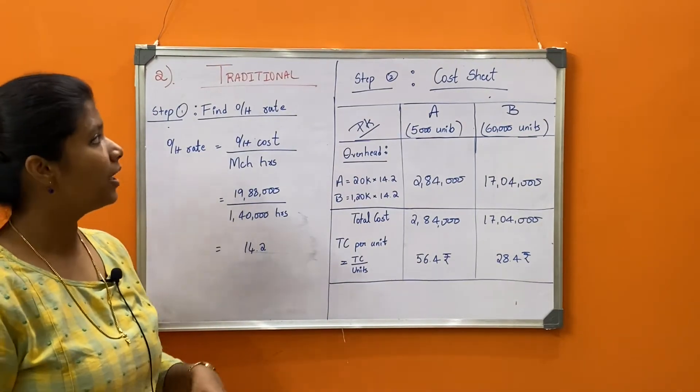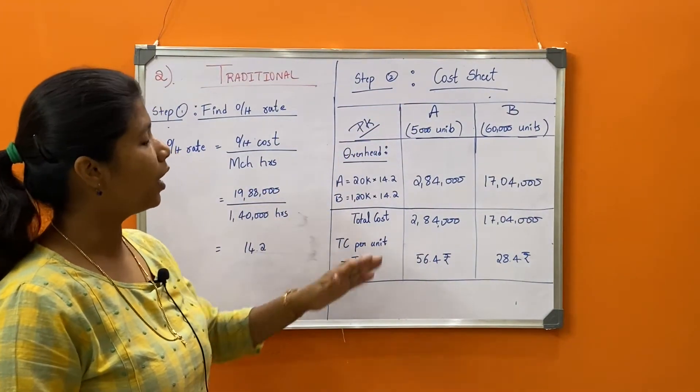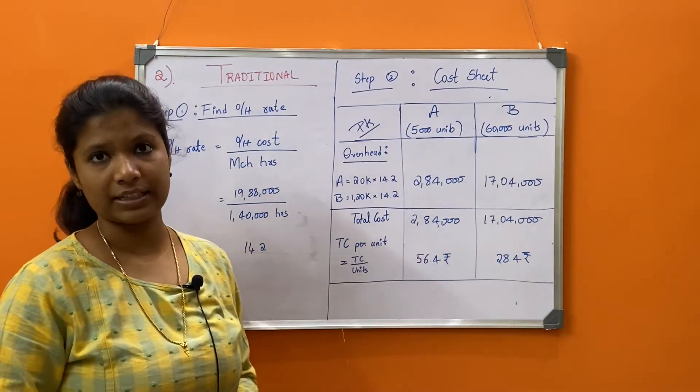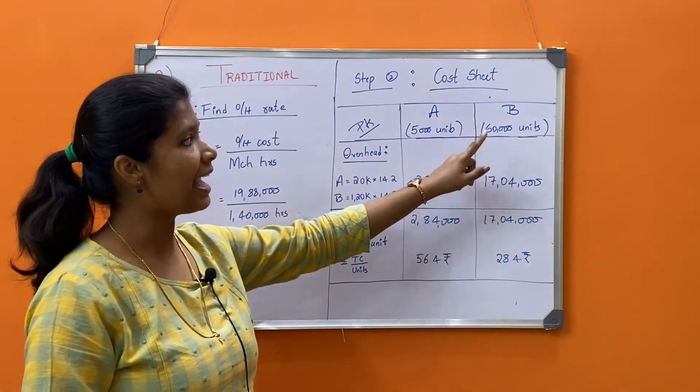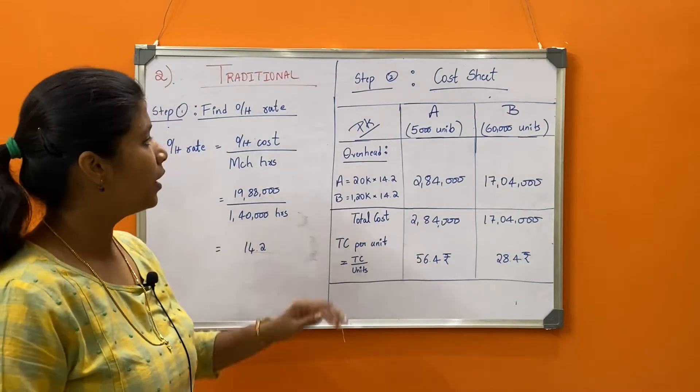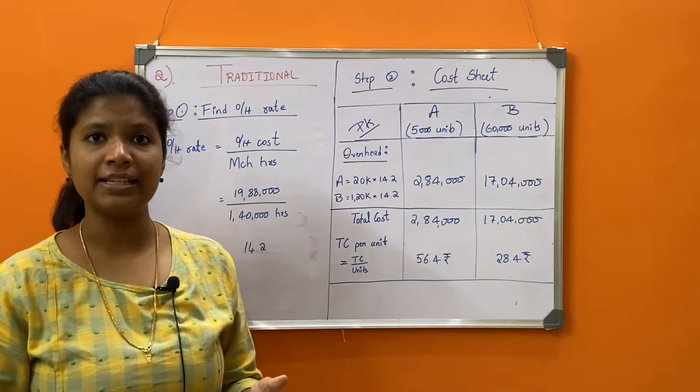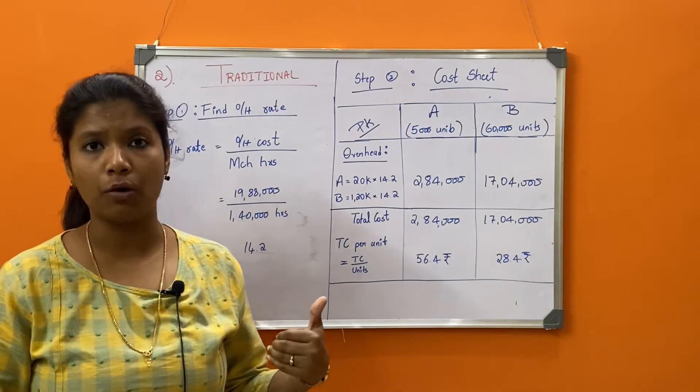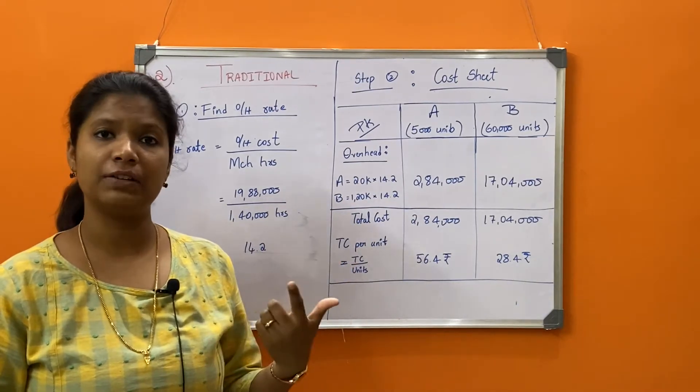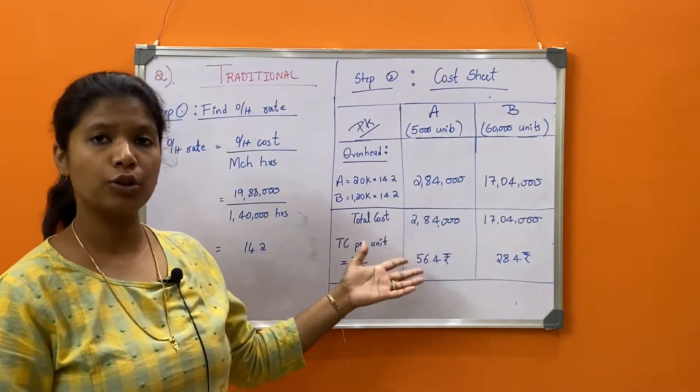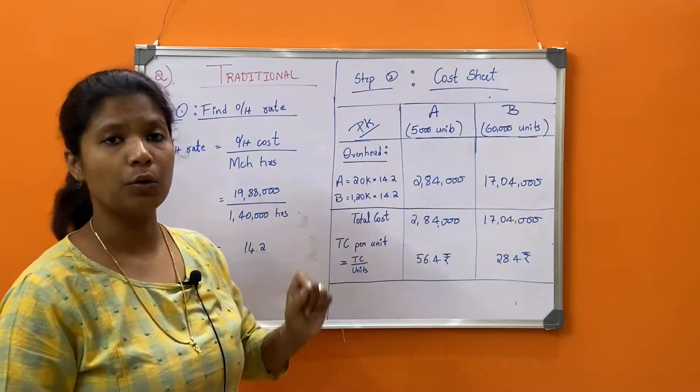Step two is finding the cost sheet or cost per unit of the product. Here we have product A as well as product B. A has produced 5000 units and B has produced 60,000 units. Always remember in a cost sheet, the general format is direct material, direct labor, and then all the overheads. In this question they have not given us material or labor information, so we can ignore both those aspects and start ahead with overhead cost.